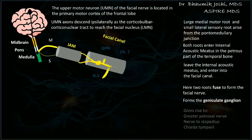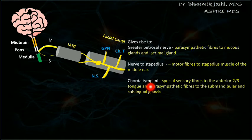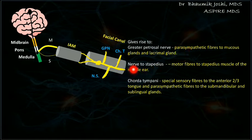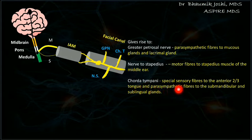After the geniculate ganglion, the nerve gives three branches: the greater petrosal nerve, the nerve to stapedius, and the chorda tympani. The greater petrosal nerve provides parasympathetic supply to mucus glands and the lacrimal gland, so it is involved in lacrimation. The nerve to stapedius supplies the stapedius muscle, which dampens sound coming to the ear. The chorda tympani has two functions: taste sensation for the anterior two-thirds of the tongue, and parasympathetic fibers to the submandibular and sublingual glands for salivation.